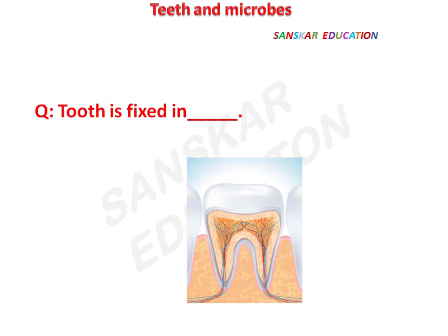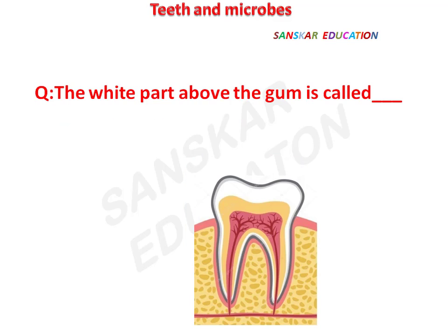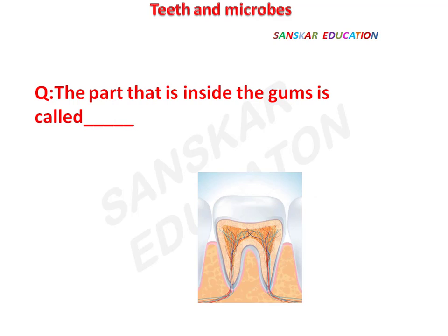A tooth is fixed in gums. The white part above the gum is called the crown. The part that is inside the gums is called the root.